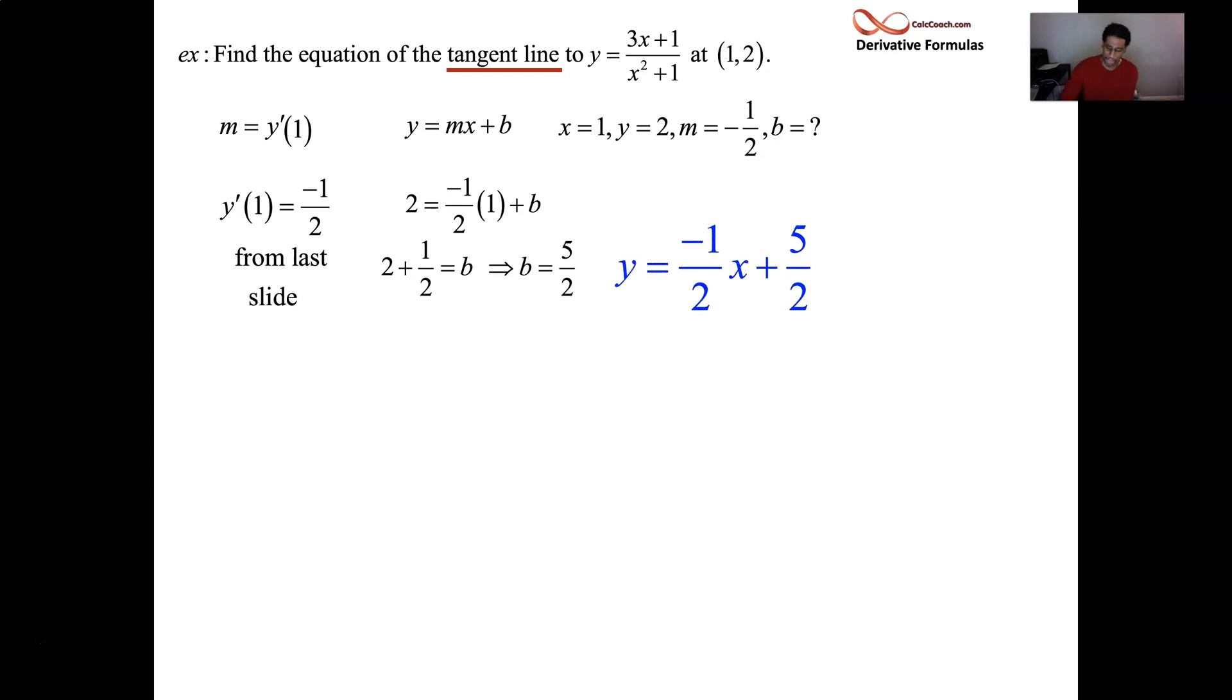All right, great. There's a graph of it for you. The function in blue, the tangent line in red at the point, of course, where x is equal to 1 and y is equal to 2 at that point. The slope of that tangent line is negative 1 half. And the equation of that tangent line, negative 1 half x plus 5 halves. All right, great.